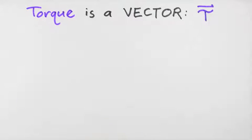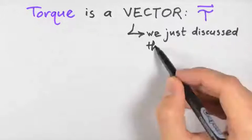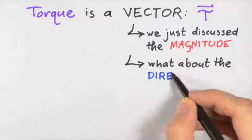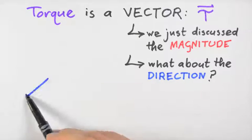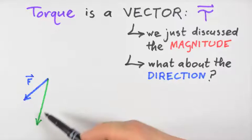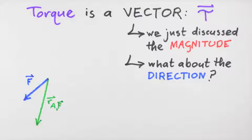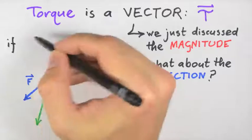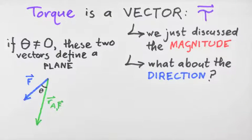Now since torque is a vector, we now need to discuss how to find the direction of this vector. To visualize this, let's start by arranging the arrows representing the vector force F and the position vector r sub a F in such a way that we place the tails of the arrows at the same location. Remember that we don't change the meaning of the vectors if we translate them as long as we don't stretch or shrink their lengths or change their directions. Now as long as the angle theta between the vectors is non-zero, these vectors define a plane.